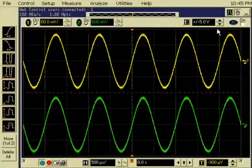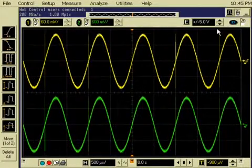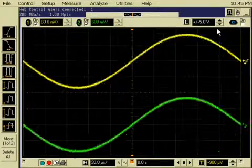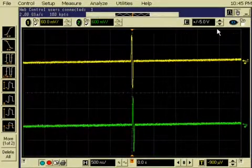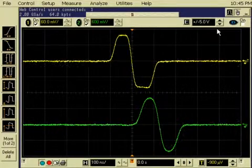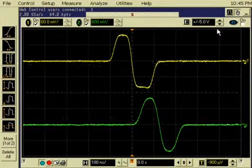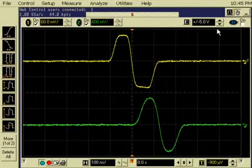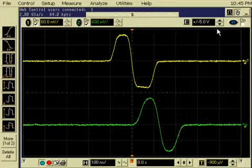So here I have the same arbitrary waveform being output by two different function generators. On the top in yellow is the DDS generator, and in green is the Agilent 33522A. The arbitrary waveform is basically a sine wave with this little glitch. And what we're going to do is see what happens to this glitch on each generator as we increase the frequency.